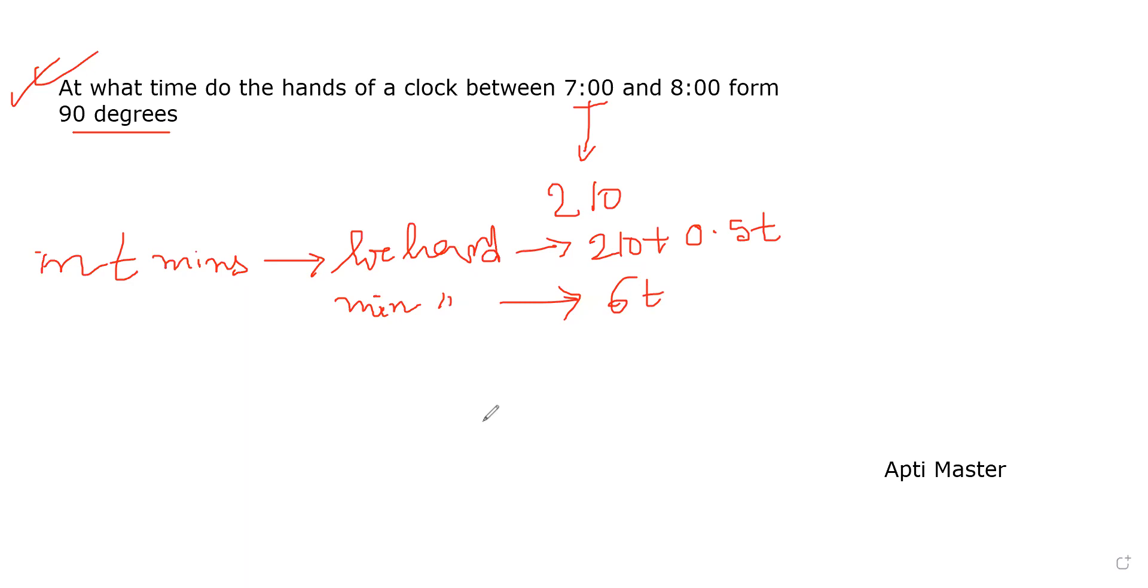So the difference between them should be 90 degrees. It can be both before the meeting or after the meeting. So we will do this: suppose this is A, this is B. We will do first A minus B, and next we will do B minus A, which equals 90.